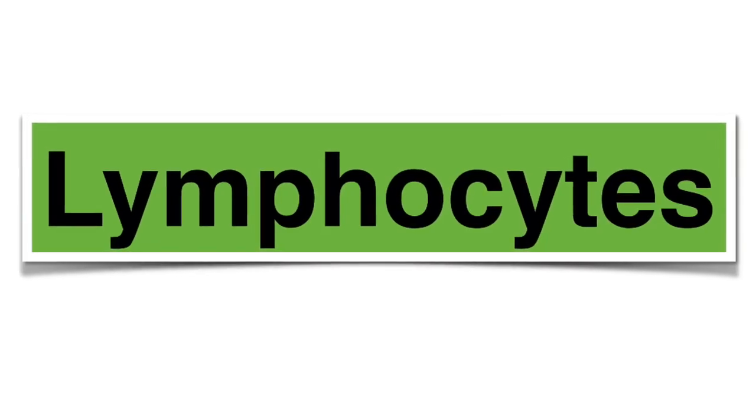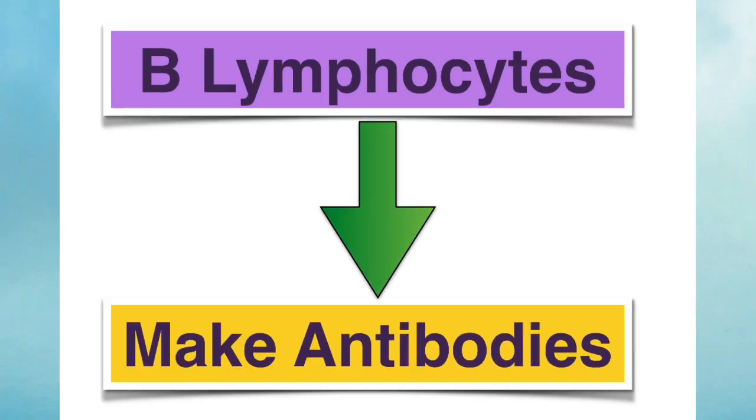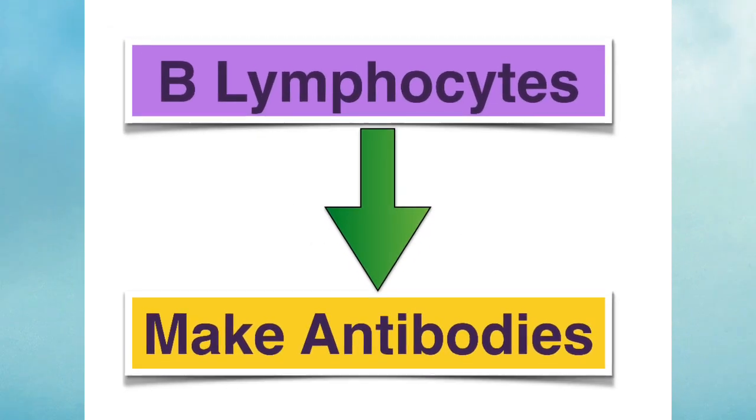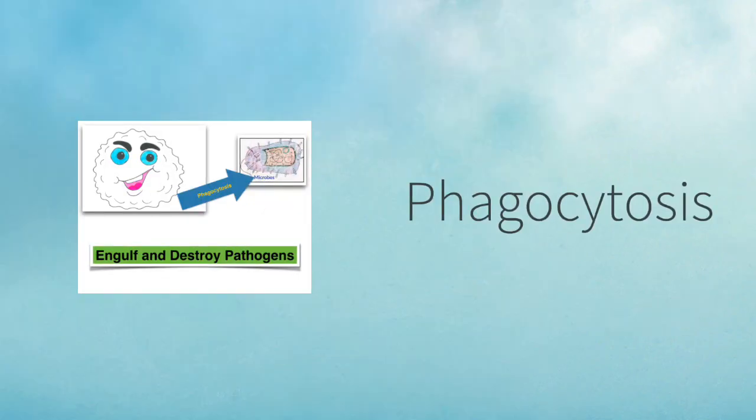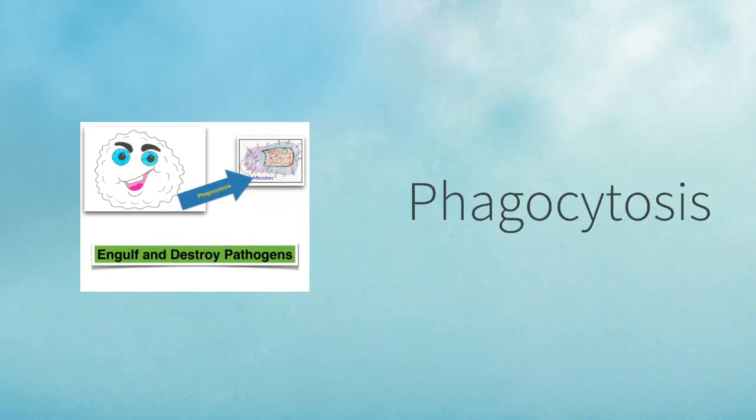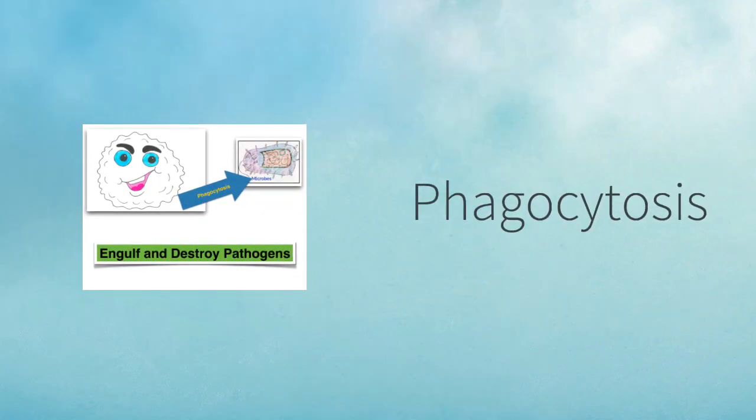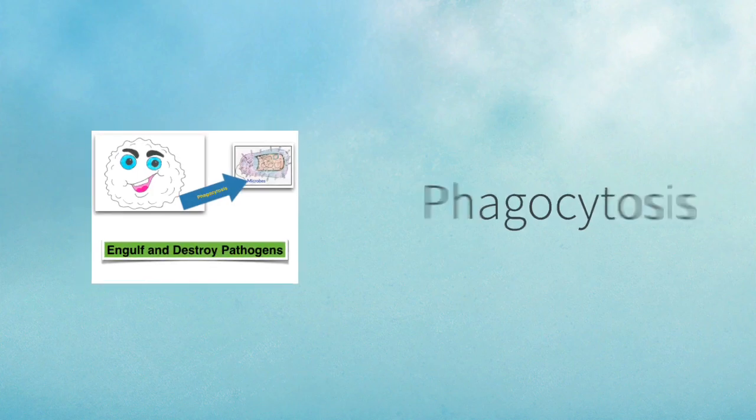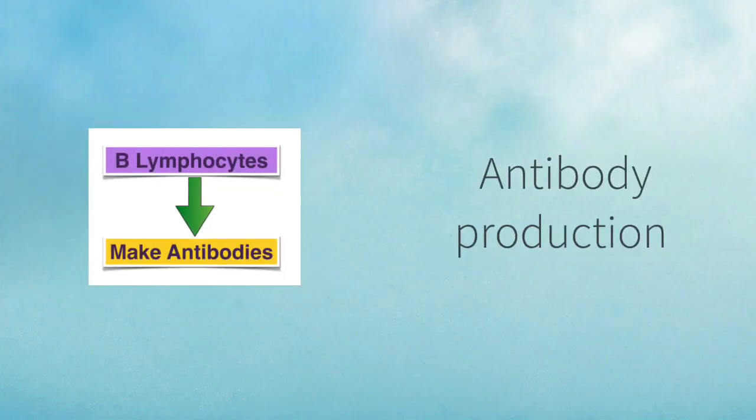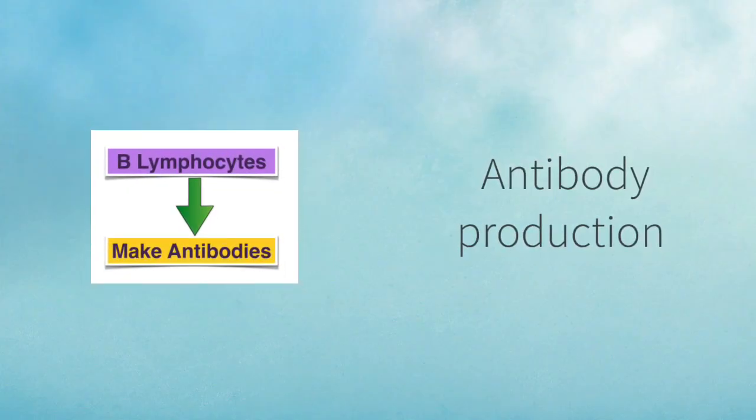Lymphocytes are the other group of white blood cells, and it's B lymphocytes that make antibodies. So white blood cells fight infection. There are the monocytes that do this by phagocytosis, by engulfing and destroying pathogens, and then there are the lymphocytes who fight infection by producing antibodies.